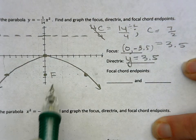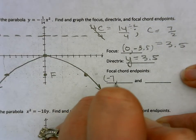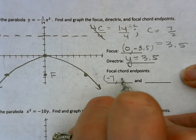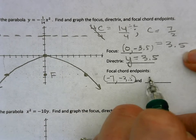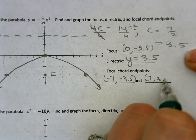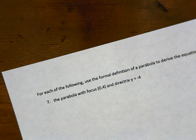So then make my U shape. So my focal chord endpoints, I went left and right 7. So left 7 at the same height as my focus, which is at negative 3.5. And then right 7 and at the same height, negative 3.5. And that should be good.